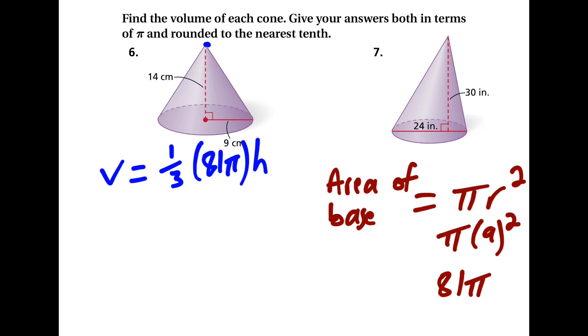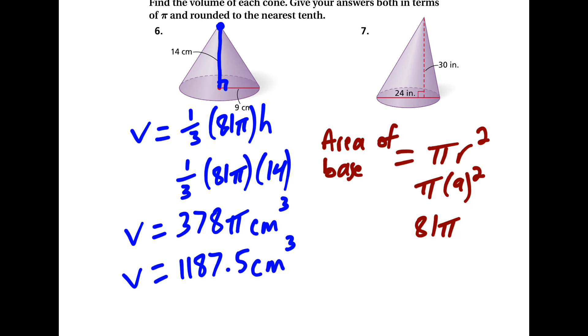Then the height is the distance from the vertex to the base so that it forms a 90-degree angle. So we can plug in 14. So then we just multiply straight across and we have two answers. One we leave in terms of pi, that's 378 pi centimeters cubed for the volume. Or we can multiply it by pi and round to the nearest tenth. So these are our two possible answers.